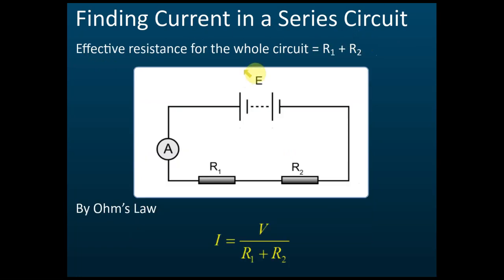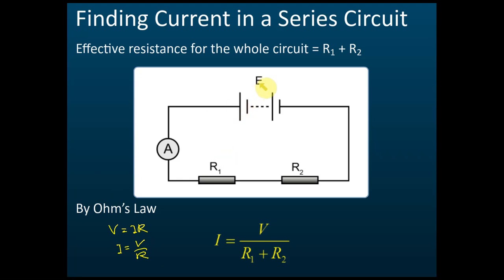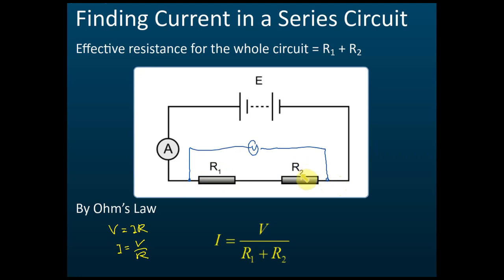Finding current in a series circuit: if they give you the EMF and there are two resistors, from Ohm's Law the relationship between potential difference, current, and resistance is V = IR. If you want to find current, I = V/R. In this case, if they give you the EMF, you can use it as the potential difference. But always remember — you must determine which two points you are measuring the potential difference between. If you choose the two outer points, then your resistance is R1 plus R2.